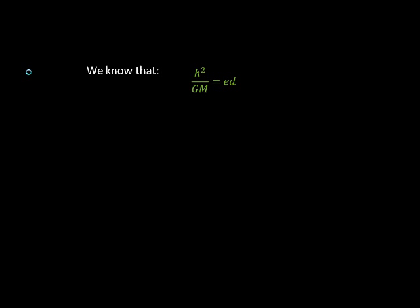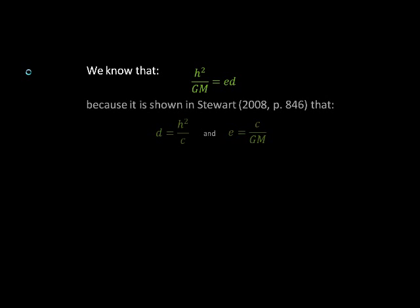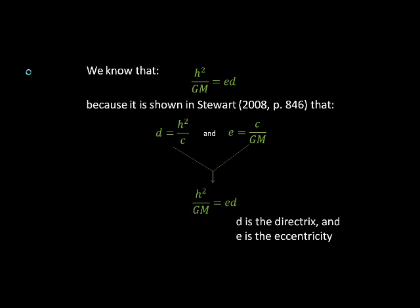We're going to step aside and go down a different road now and show something that will help us prove our equation in the end. We know that h squared over GM is equal to ED, and I'll show you how we know that. In Stuart's calculus book, Early Transcendentals, 6th edition, it shows that d is equal to h squared over c, and e is equal to c over GM. When we combine these, we get h squared over GM is equal to ED. So this is what we just said we know.